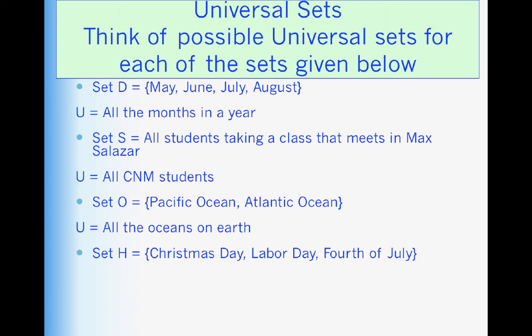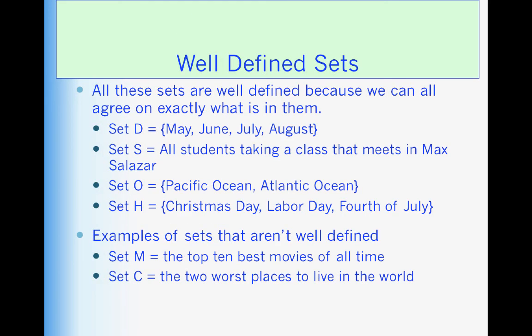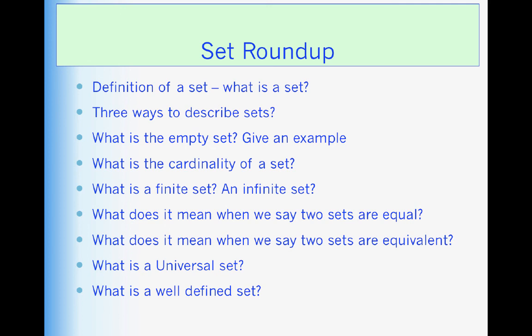Well-defined sets, another concept. Well-defined sets are sets that we can all agree on the elements of. Everything that we've been talking about are well-defined sets. Now, look at the examples of sets that are not well-defined. Set M, the top 10 best movies of all time. Well, my set is going to be different from your set. So that's an example of a set that is not well-defined. Take a look at the slide. Pause. Look at all the questions. Can you answer them?